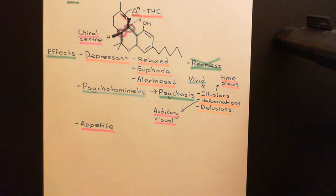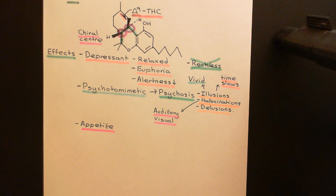We'll have a break here, and in the next video we'll start by discussing how cannabis is removed from the body — a little bit on the pharmacokinetics of cannabis — and then we'll move on to the come-down, addiction, and then looking at the mechanisms that can explain cannabis's effects.